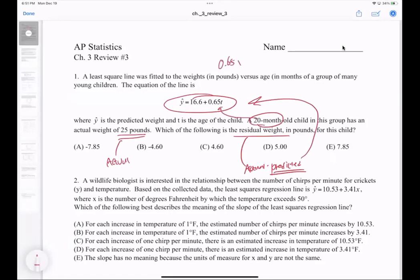So 0.65 times 20 plus 16.6 gives you your y-hat, which is 16.6 plus 13, giving you 29.6 as your predicted. Now you do 25 pounds minus the predicted 29.6, which gives you negative 4.6. That should be your residual for number one.